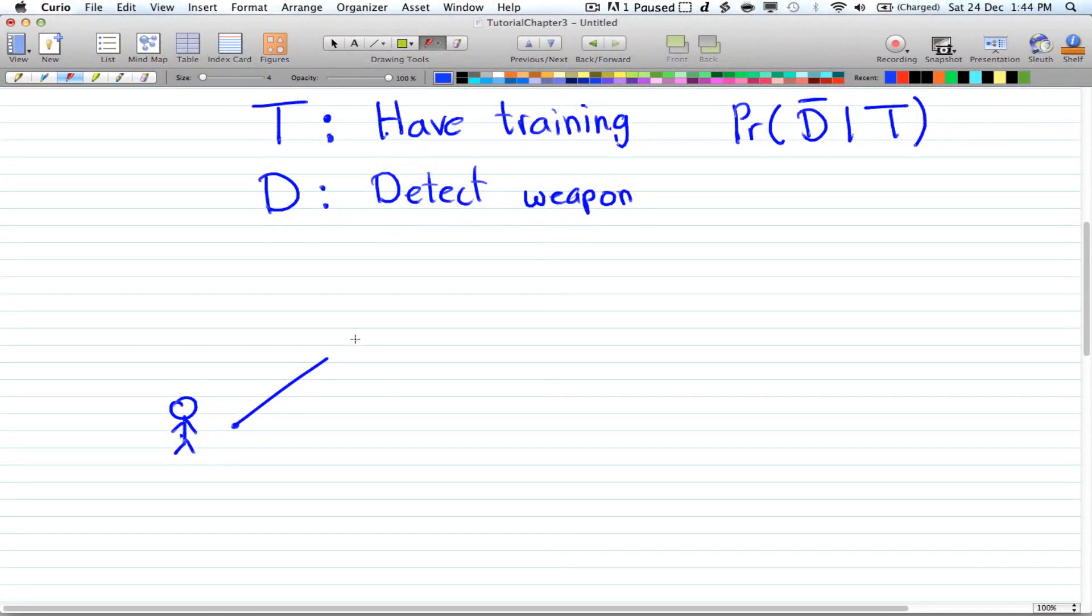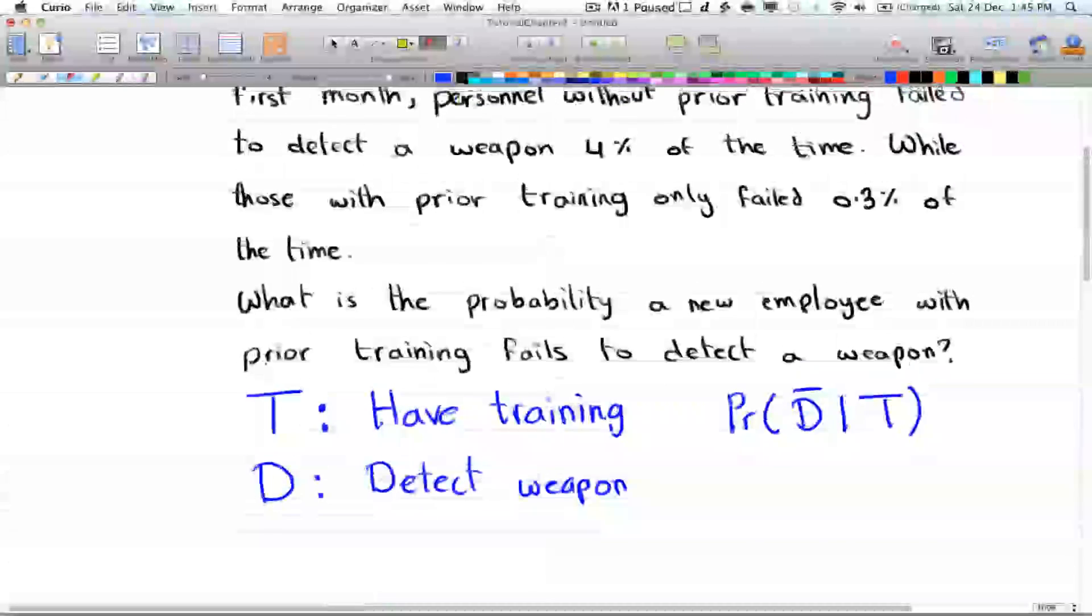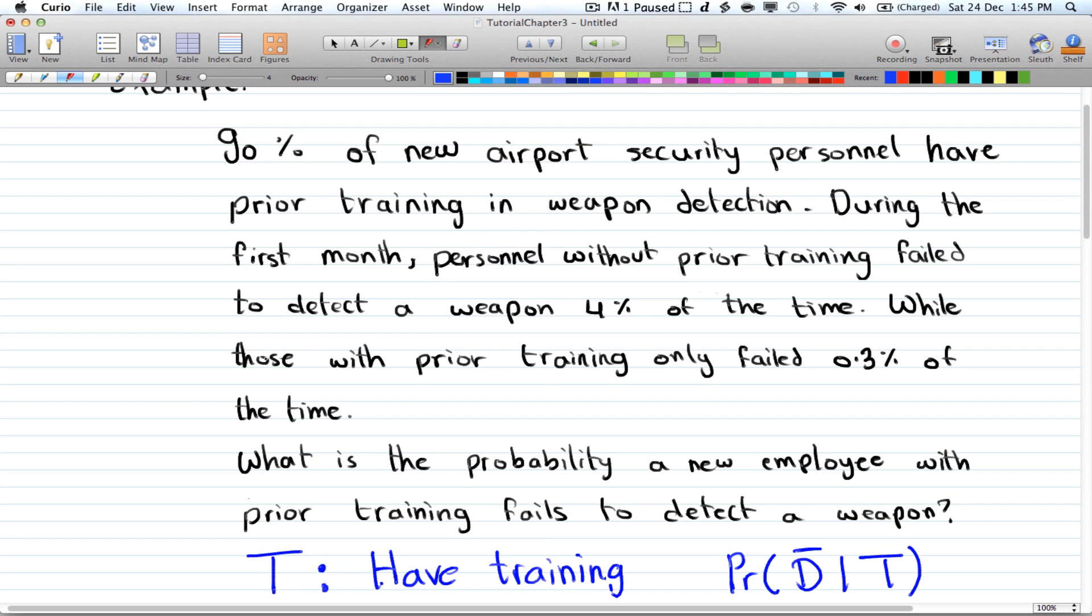So here you have 90% of new airport security have prior training. So you go ahead and just draw, take like a random person at first, and this guy had training. So 90% of the people will have training, and that leaves 10% that don't have training. 10 is just 100 minus 90.